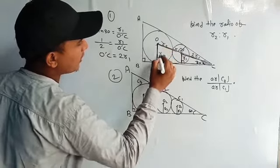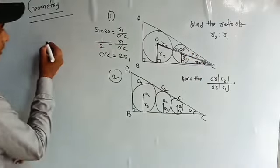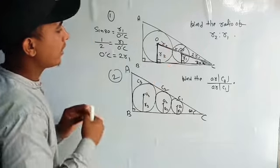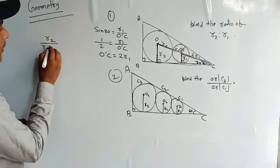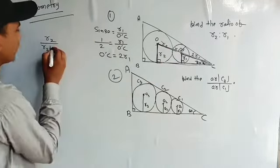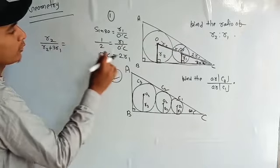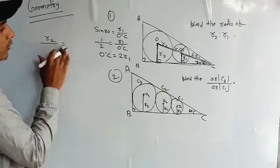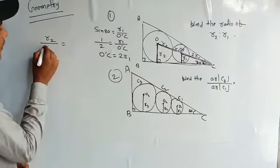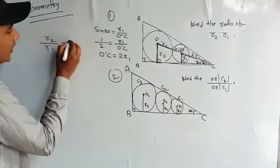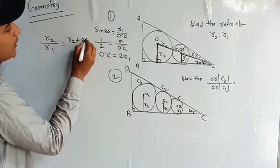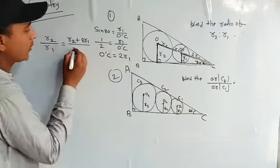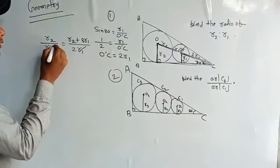So I am doing one thing. I am taking a hypotenuse ratio. This is R2 upon R2 plus R1 plus 2R1. How much? 3R1 equal to. This is R2 upon R1 equal to R2 plus 3R1 upon. This is how much? This is 2R1. This is R1.